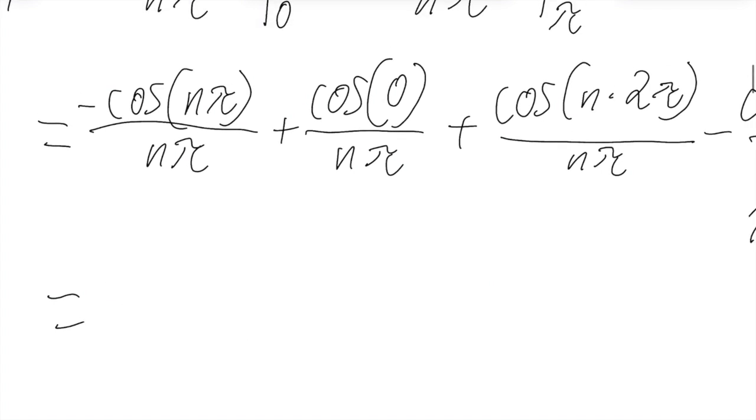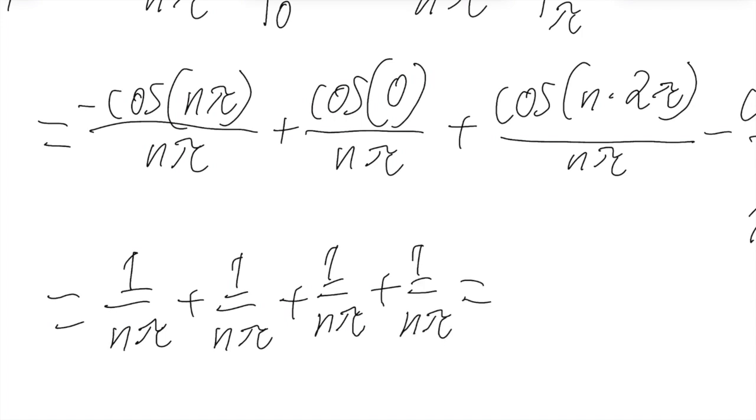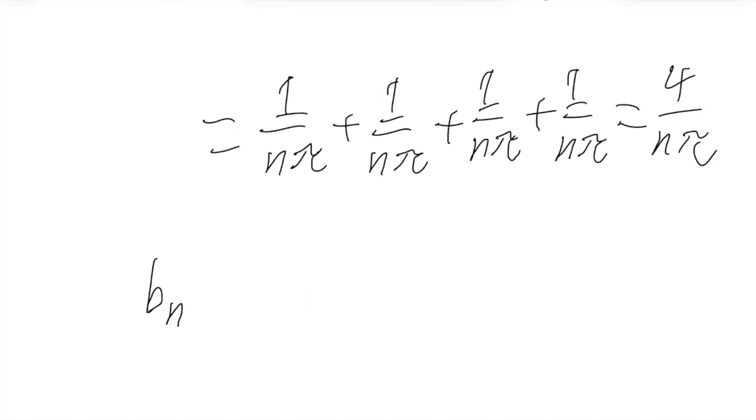But in the odd case, it'll be 1 over nπ plus 1 over nπ plus 1 over nπ plus 1 over nπ, which equals to 4 over nπ. So b_n has 2 cases. If it's even, it'll equal to 0. But if it's odd, it'll equal to 4 over nπ.